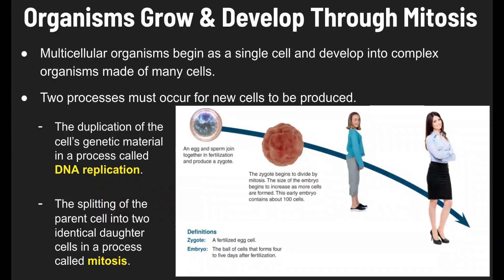Through the process of mitosis, that zygote begins to divide. The size of the embryo — an embryo being the ball of cells that forms about four to five days after fertilization — begins to increase as more cells are formed. This early embryo contains about 100 cells.